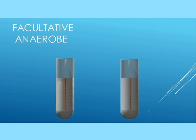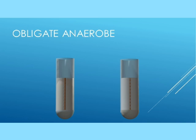If they can grow within the agar deep and at the surface, then they are capable of both aerobic and anaerobic metabolism and are facultative anaerobes, while those which only grow deep in the agar are the obligate anaerobes.